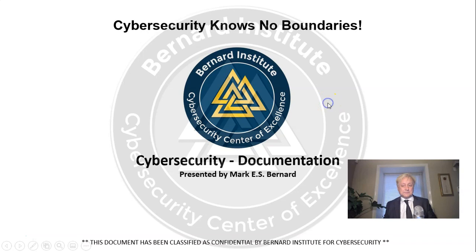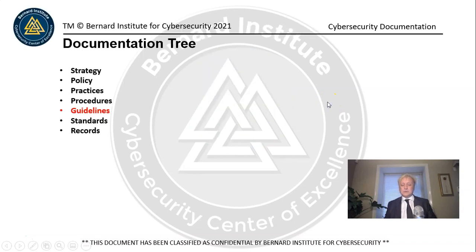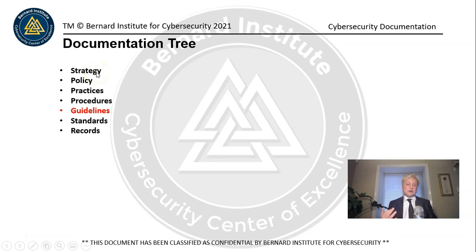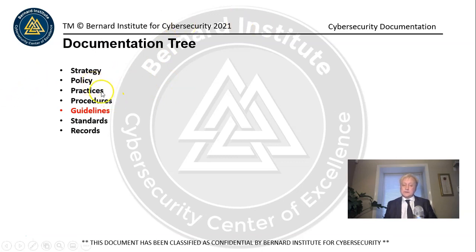Today we're talking about documentation. What's so important about documentation? There are many different types of documentation. There's strategic or tactical type documentation that describes what the strategy is of your cybersecurity program. Of course, we have policies and we have practices and procedures, and I'll explain the difference between these and guidelines — guidelines are in red for a very specific reason that I'm going to tell you about — and standards and records. So let's go on and take a look here at what we have.